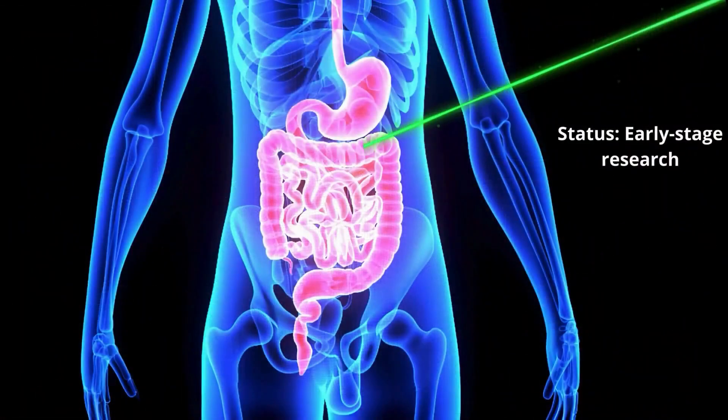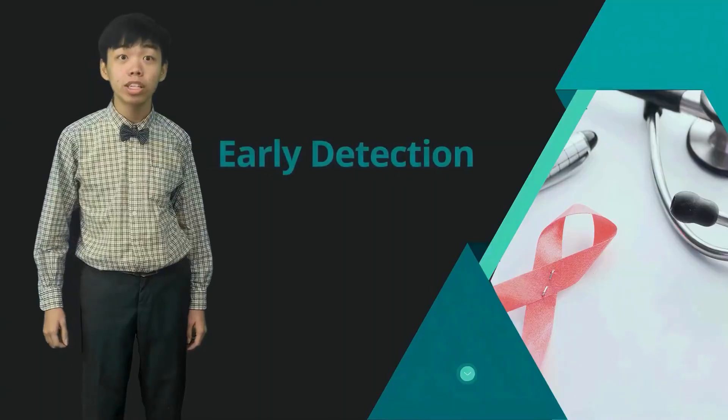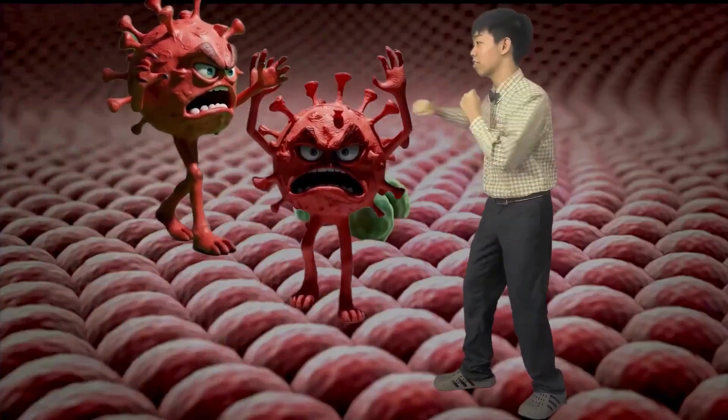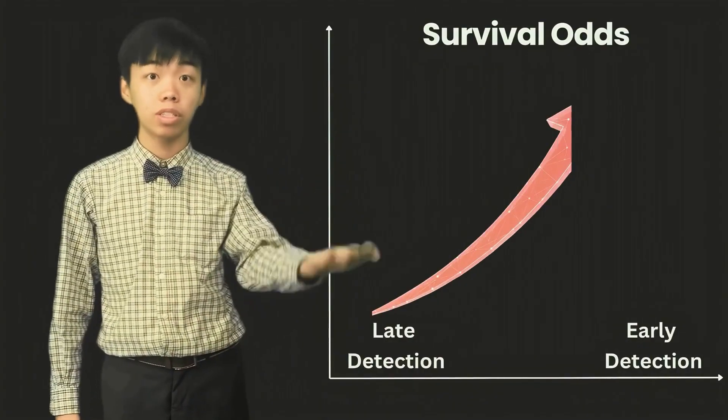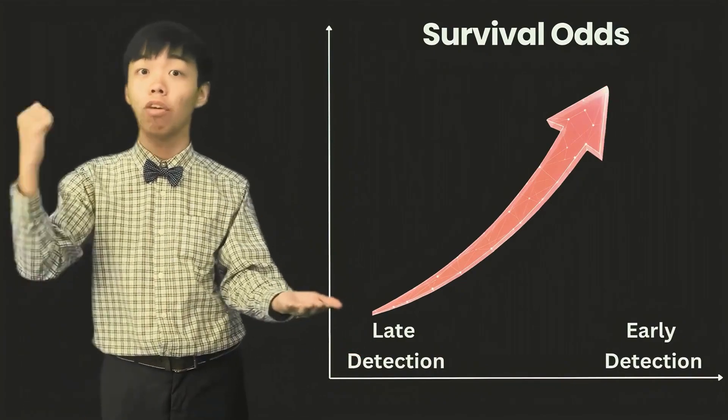In the future, scientists hope to shine laser light and map cancer signals in tissue or the body, far earlier than methods like traditional MRI. Early detection matters. It's like fighting a few gangsters instead of an entire army. The sooner you spot the threat, the better your chances of winning.